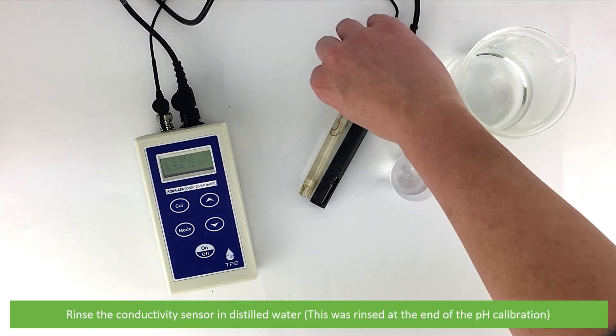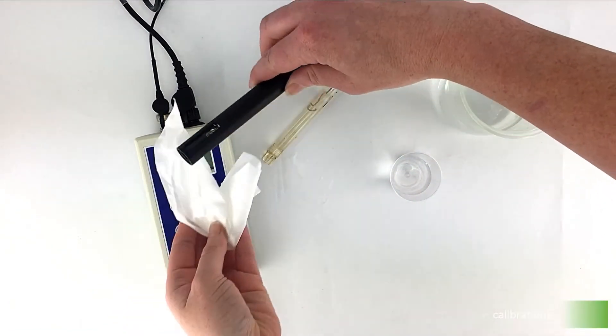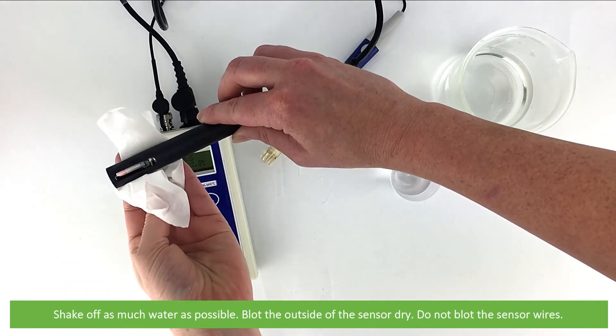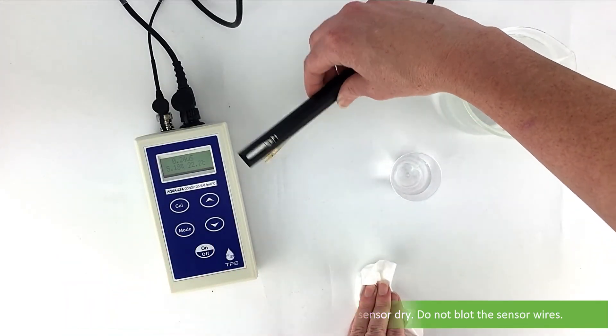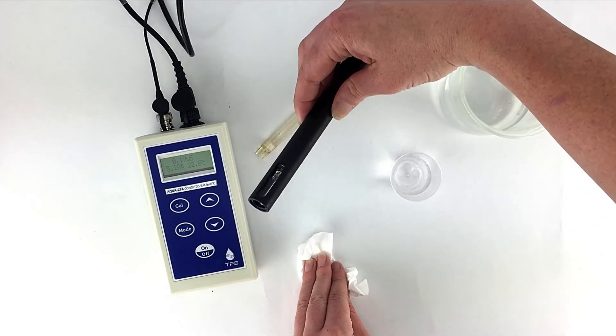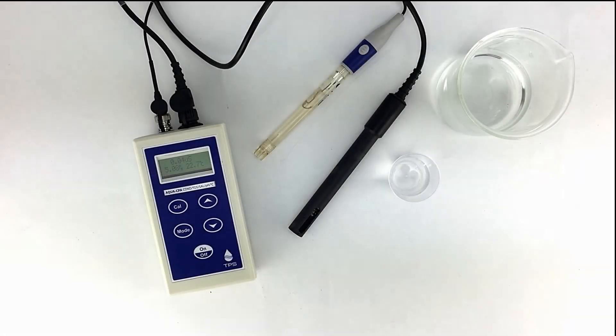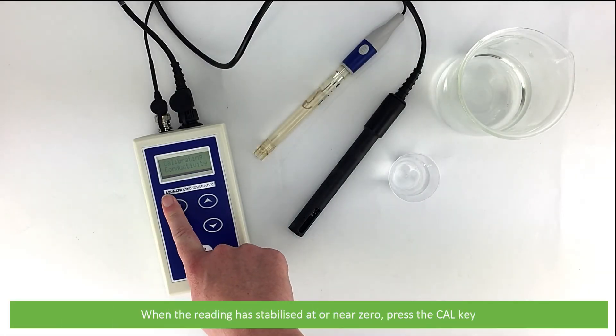Rinse the conductivity sensor in distilled water. Shake off as much water as possible and blot the outside of the sensor dry. Do not touch the sensor wires. After rinsing the sensor, leave it to air dry.